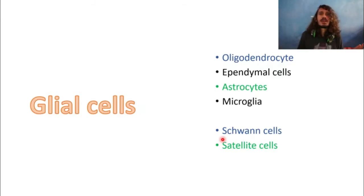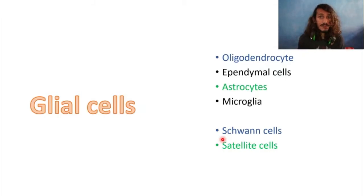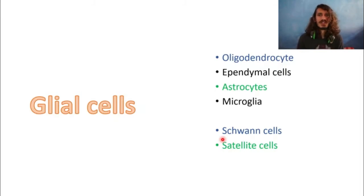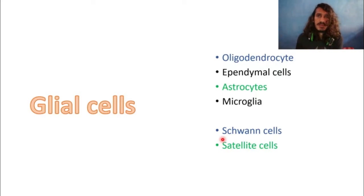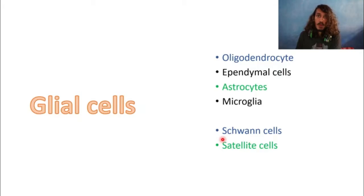Ependymal cells line the ventricles and are involved in CSF formation. Astrocytes form a bridge between capillaries and neurons, helping form the blood-brain barrier. They also take up excess glutamate and have nutritive and other functions including helping in memory formation — assisting in pruning of synapses along with microglia. Microglia are the scavenger cells of the CNS — analogous to Kupffer cells in the liver or histiocytes in the skin — forming the macrophage system of the central nervous system.